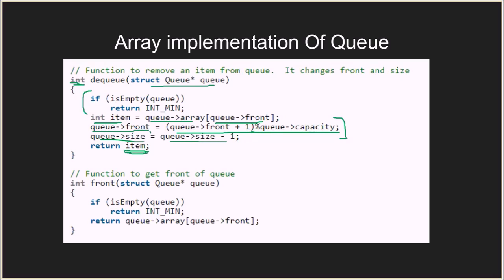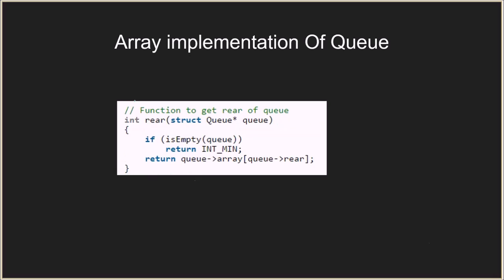There is a front accessor function which gets the element at the front of the queue. It first checks if the queue is empty — if so it returns INT_MIN — otherwise it returns the element at index front. Similarly, the rear function checks if the queue is empty; if so it returns INT_MIN, otherwise it returns the element at index rear, which is the element at the rear of the queue.